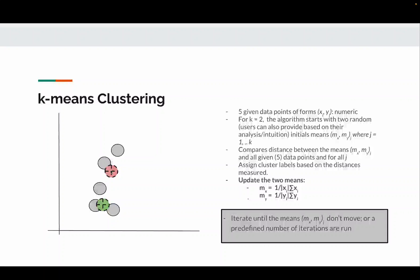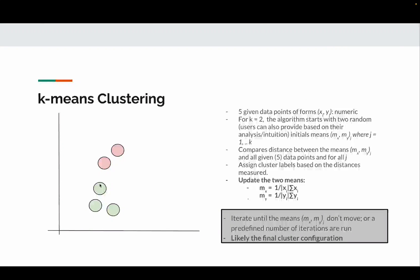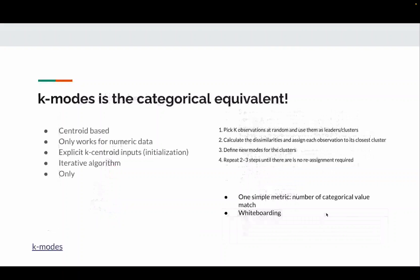We follow the same procedure iteratively — we compare which data points are closer to the new updated mean and redo the estimates of the means. The iteration finishes if the means don't move at all, meaning they remain at the same location. Another option is to run the mean update iterations for a predefined number of times. The final output assigns data points to their respective clusters.